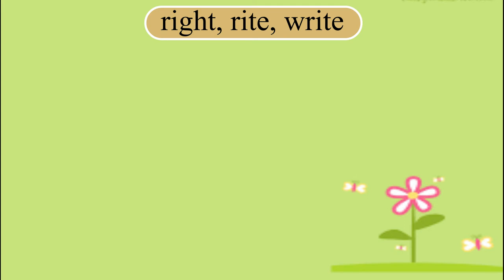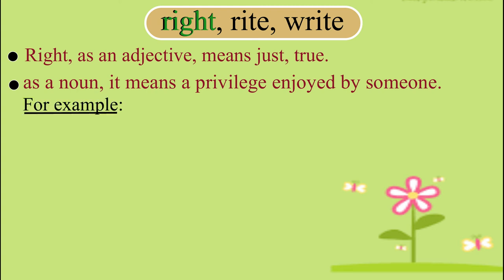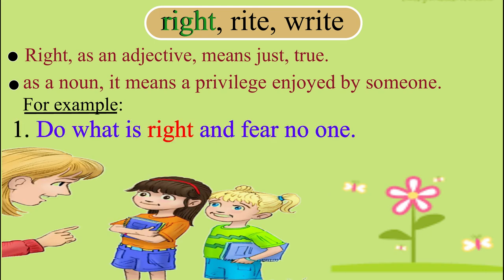Let us understand these three words — all with exactly the same pronunciation. R-I-G-H-T: right as an adjective means just, true; as a noun, it means a privilege enjoyed by someone. R-I-T-E: rite means a ceremony. W-R-I-T-E: write means to form written letters. For example: 'Do what is right and fear no one.' 'The chief guest performed the rite of lighting the lamp at the annual sports.' 'Write your name at the top of the paper.'